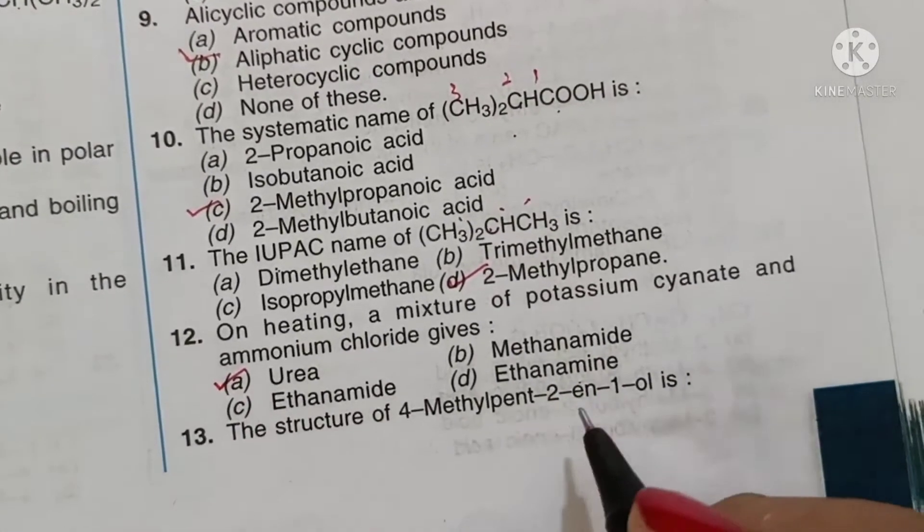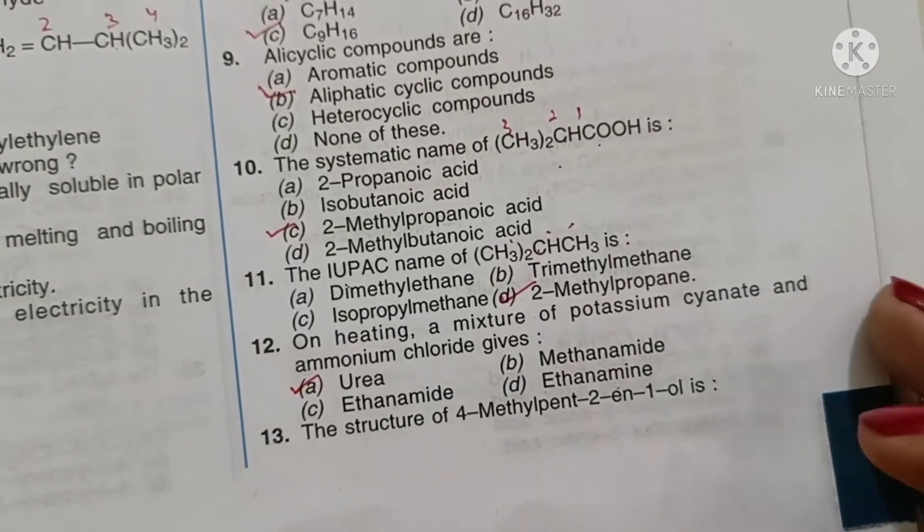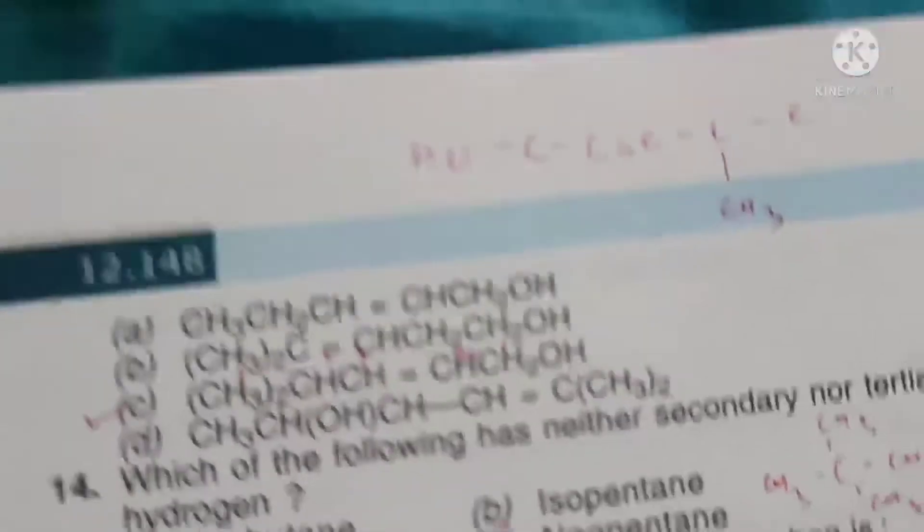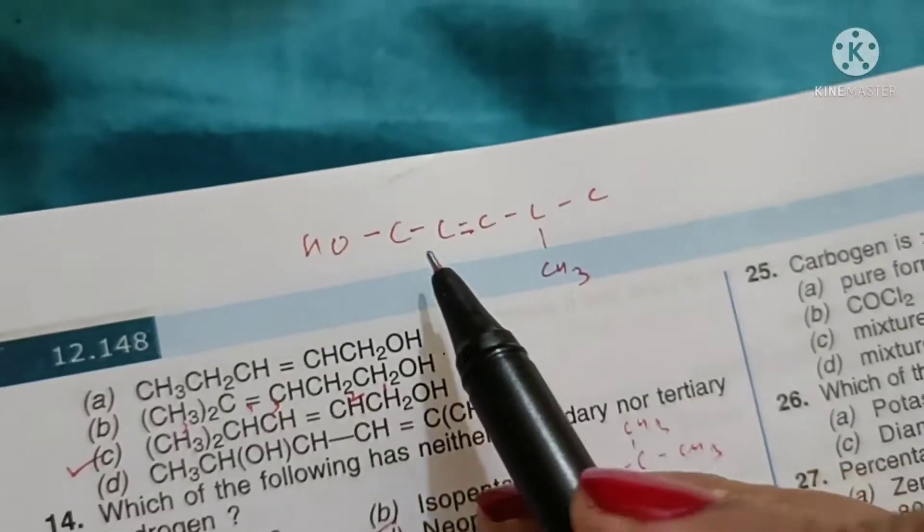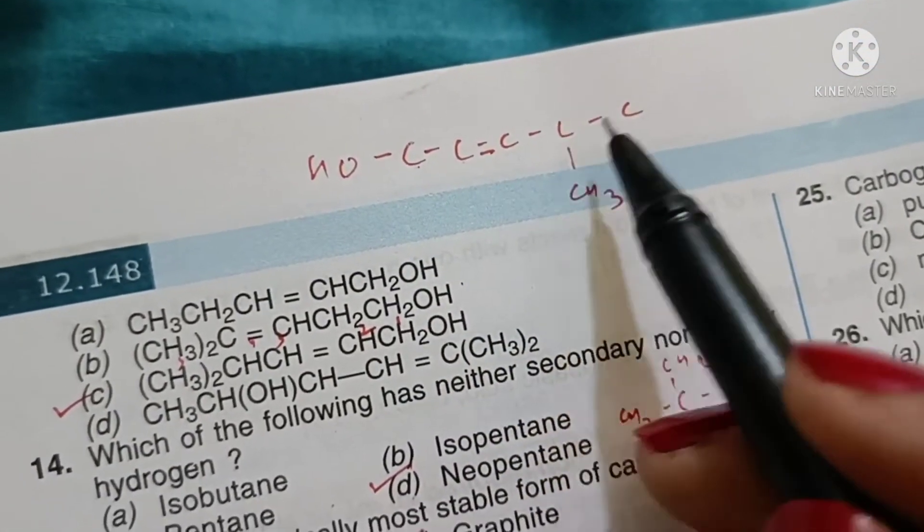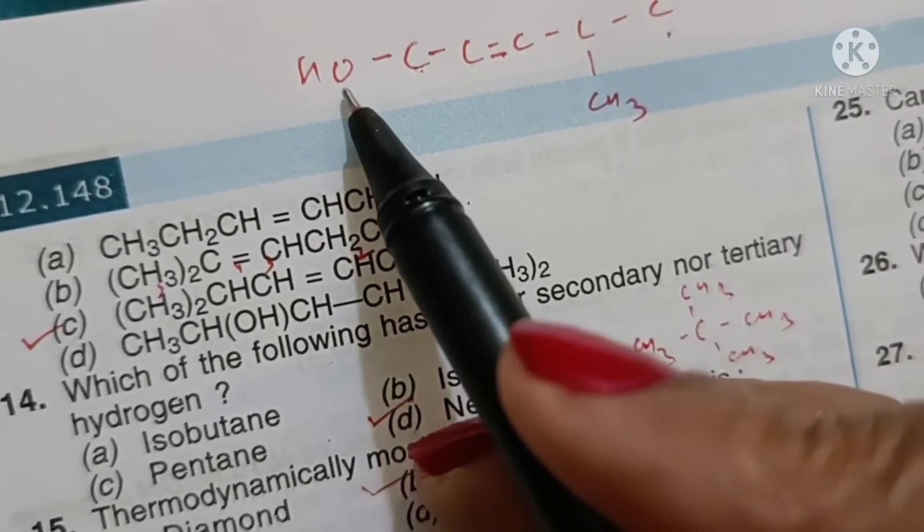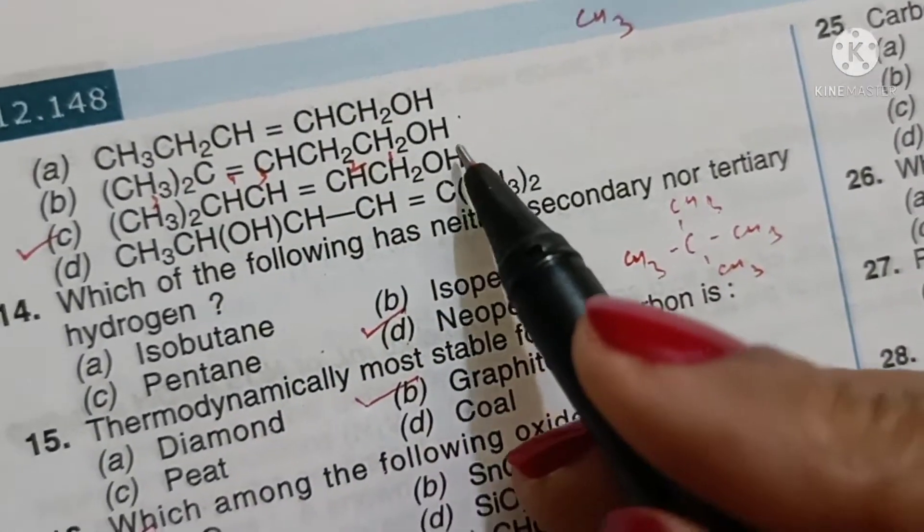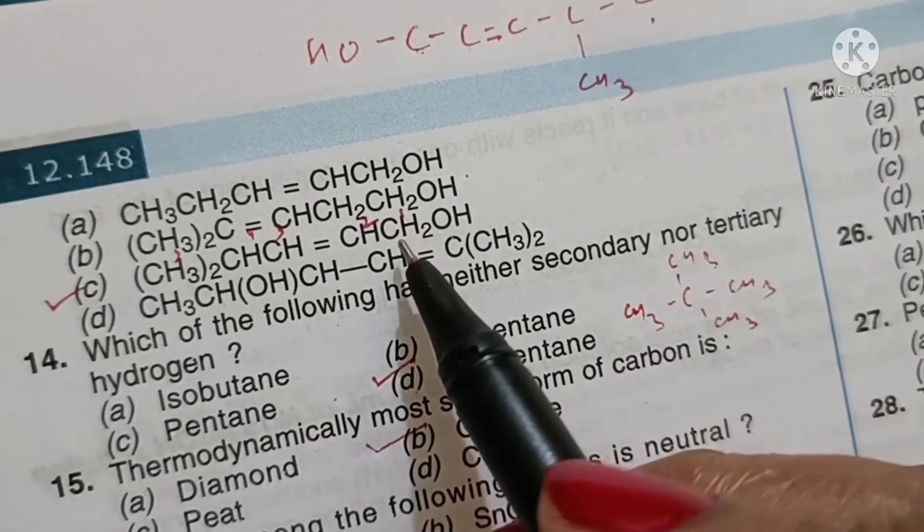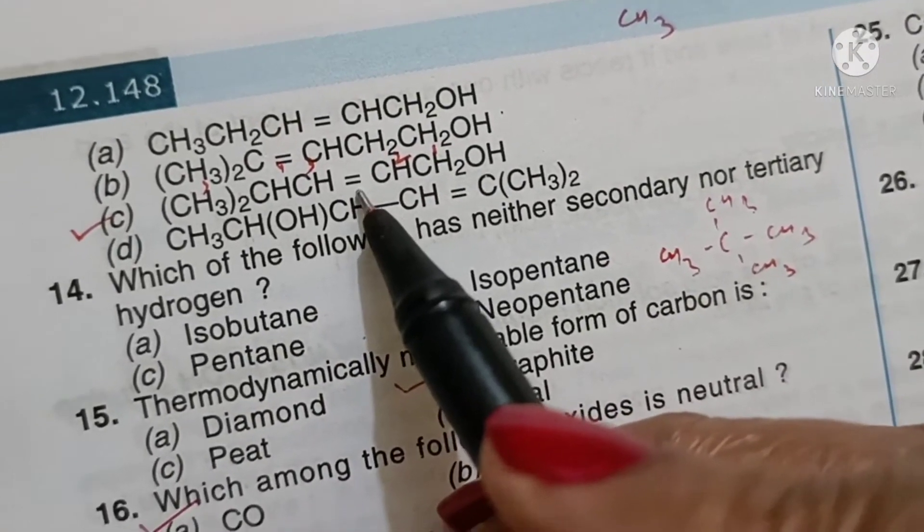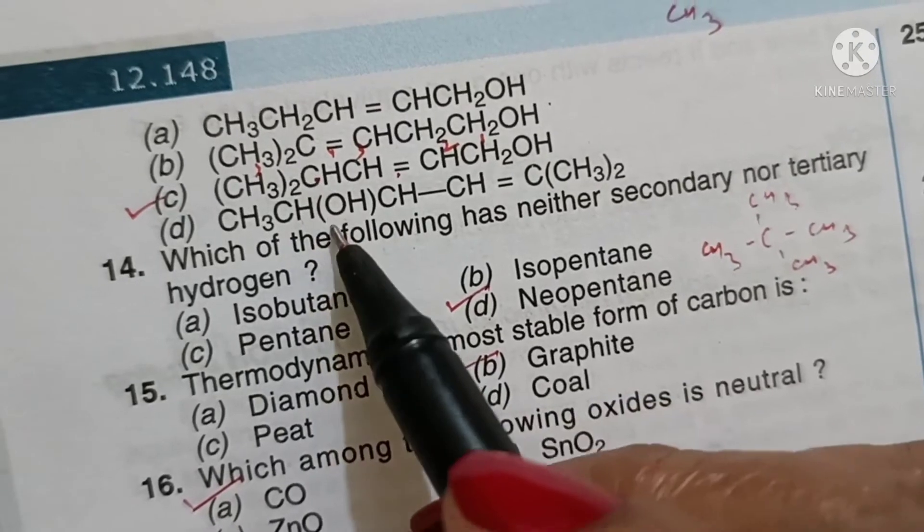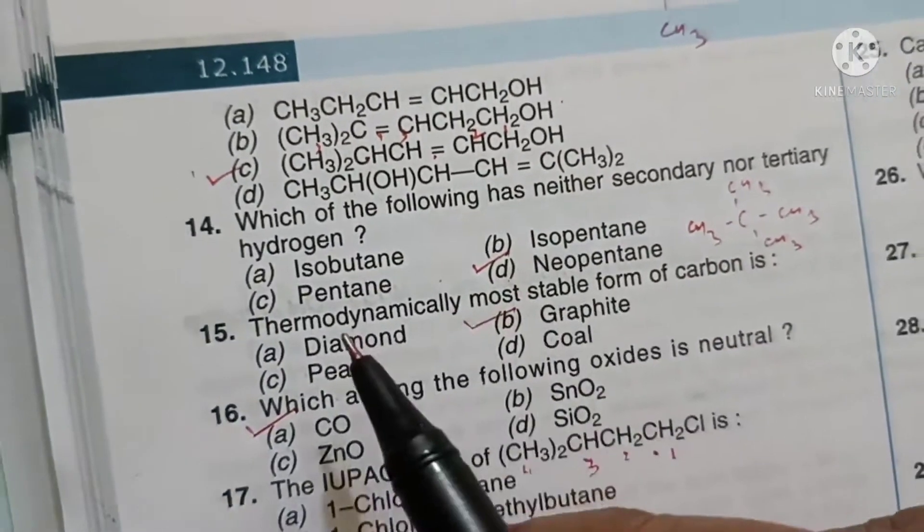Structure of 4-methylpent-2-en-1-ol. Pent word root is pent, so 1, 2, 3, 4, 5, and 1-ol means OH on the first carbon and double bond on the second pent-2-ene and methyl group on the fourth. Option C is the correct answer.